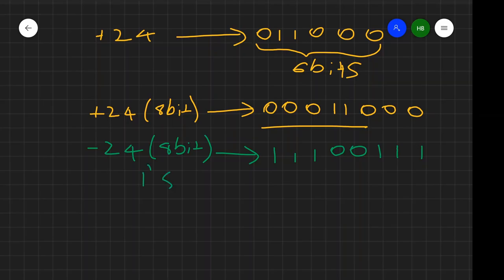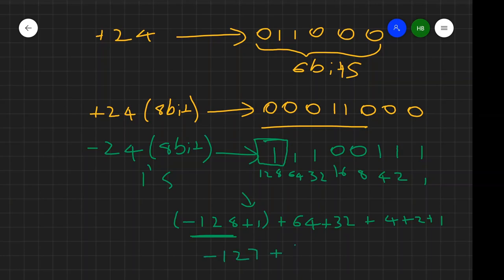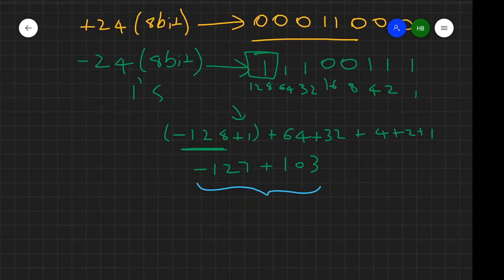Now if we check this, whether this is correct or not. This is 1, 2, 4, 8, 16, 32, 64, 128. And this will become negative 128 plus 1 plus 64 plus 32 plus 4 plus 2 plus 1. So here we add 1 because this is in 1's complement. And this negative 24, 128, we got it from here. Here it is 1, that's because this is a negative number. So we put this negative 128. This will become negative 127 plus 103. As we can see, this will reduce to negative 24.